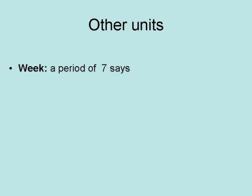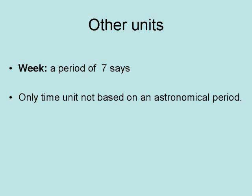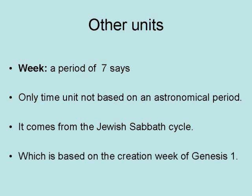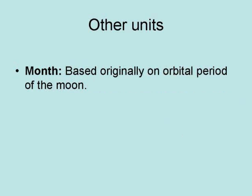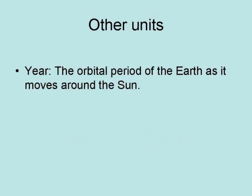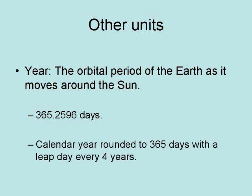A week is a period of 7 days. It is the only time unit not based on an astronomical period. It comes from the Jewish Sabbath cycle, which in turn is based on the creation week of Genesis 1. The month was originally based on the orbital period of the moon. In the Gregorian calendar, the calendar used by most of the world, months vary from 28 to 31 days. A year is the orbital period of the earth as it moves around the sun. This is equal to 365.2596 days. The calendar year is rounded to 365 days with a leap day every four years.